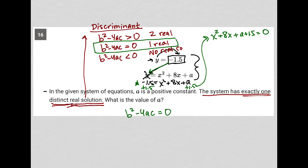In this case, my a value is the coefficient in front of the x squared. So that's going to be 1. My b value is 8. And my c value is actually all of this, a plus 1.5. That would be the numerical part of that equation.